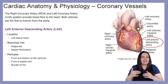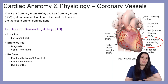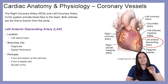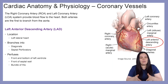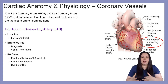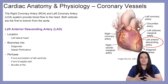Moving down from the left main coronary artery, we have our left anterior descending artery, also known as the LAD, located on the left lateral part of the heart. This branches into our diagonals, which supply blood flow to the anterior and anterolateral walls of the left ventricle, and our septal perforators, which supply blood to the anterior and inferior intraventricular septum as well as our conduction system.